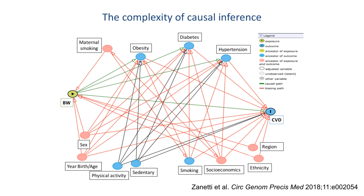In this diagram, the postulated causal relationships are shown in green, and relationships that could bias the estimates of effect are shown in red. This diagram is exceedingly complex, and that's with the exclusion of some important causal contributors such as genetic variants. This complexity makes causal inference rather challenging.